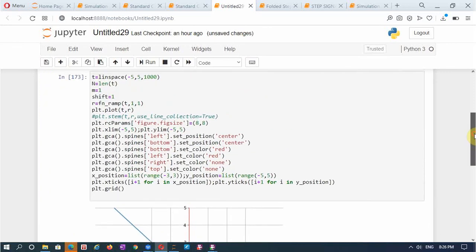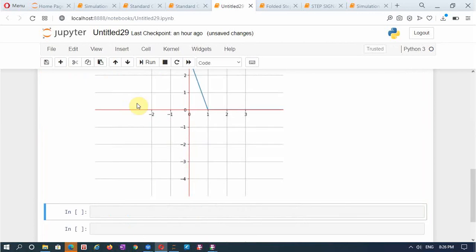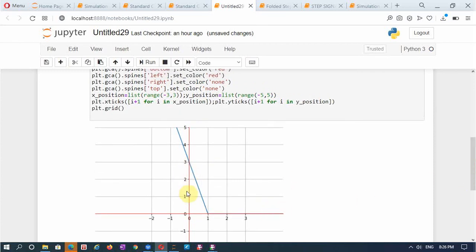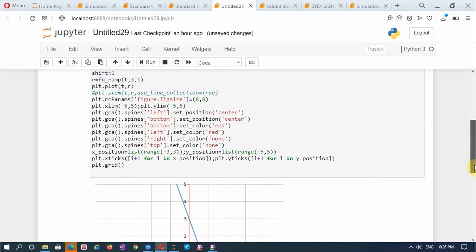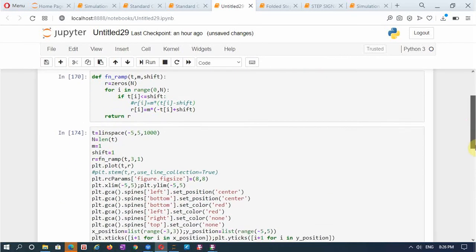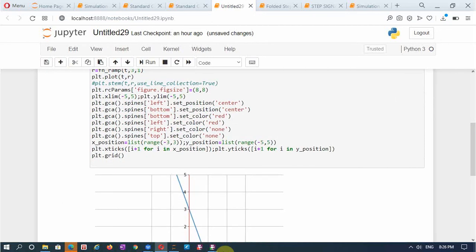Of course you can change the slope of the line by changing this quantity. Here for a change in time of 1 unit the y axis changes by 3 units. And it is negative ramp because an increase in value of time decreases the value of the magnitude. That is about generating the ramp signal and the folded ramp signal and that is all for today.